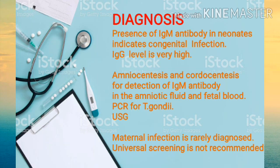Presence of IgM antibody in the newborn indicates congenital infection. An increased level of IgG also indicates congenital toxoplasmosis in neonates. During pregnancy, amniocentesis and cordocentesis can be performed for detection of IgM antibody in amniotic fluid and fetal blood. Diagnosis can also be done by PCR for Toxoplasma gondii, and ultrasound (USG) is another method to rule out congenital abnormalities due to infection.